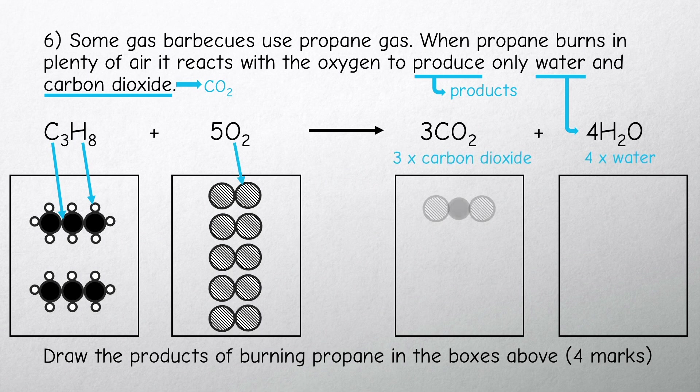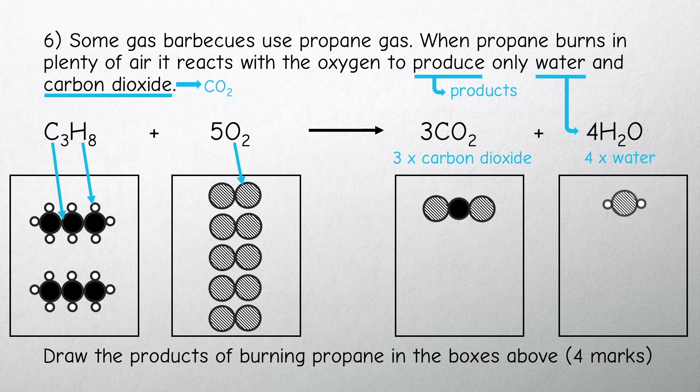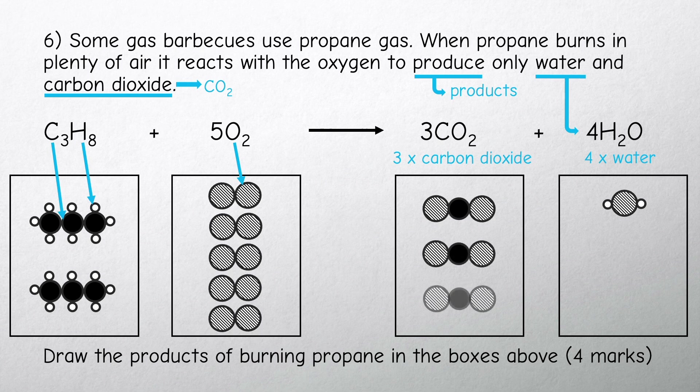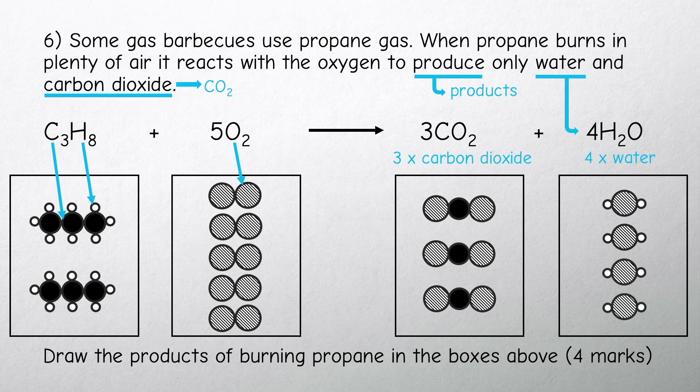You would get one mark for drawing the carbon dioxide and water molecules correctly. The clue for these is in the formula above the box. The next two marks will be for the correct number of molecules. You need to draw three molecules of carbon dioxide and four water molecules. The clue for these are the big numbers at the front of carbon dioxide and water.